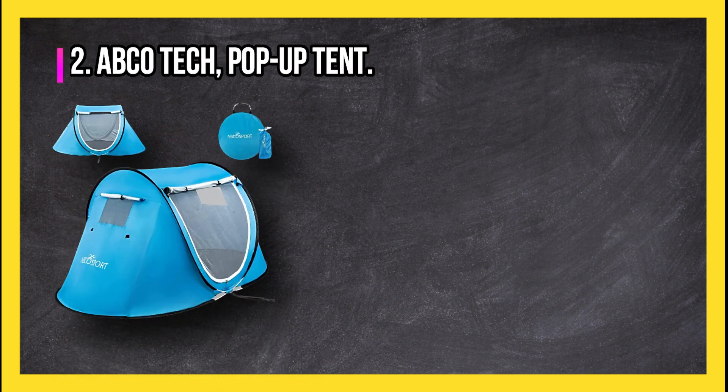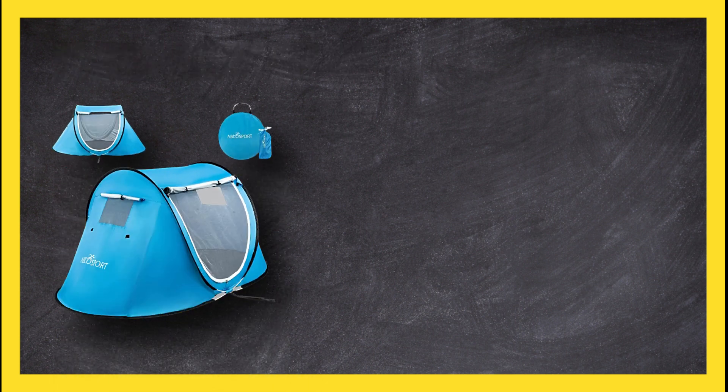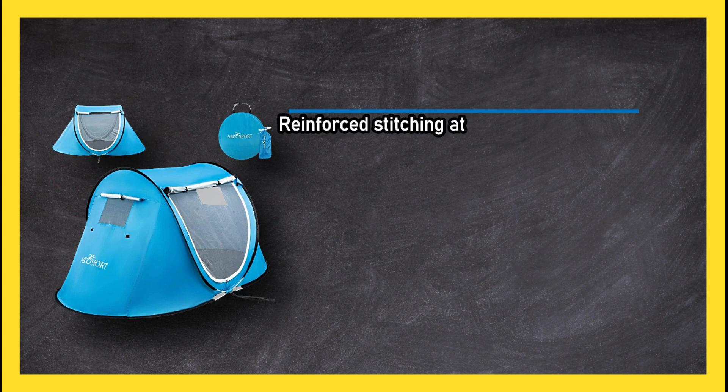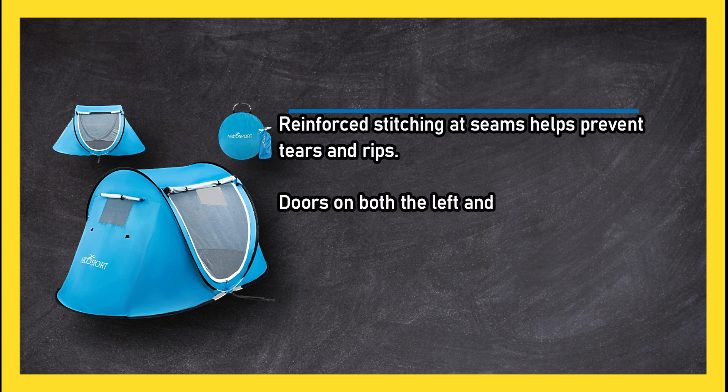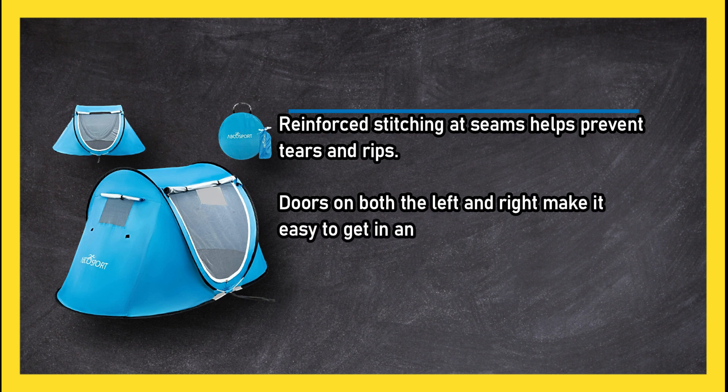At number two, the Abcotech pop-up tent. Reinforced stitching at seams helps prevent tears and rips. Doors on both the left and right make it easy to get in and out. Two mesh windows for air circulation. Includes both a carrying bag and another for other gear at a budget-friendly price point.